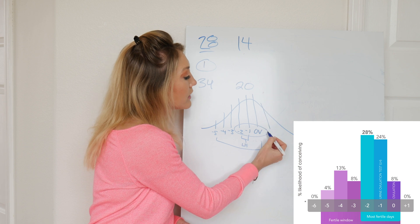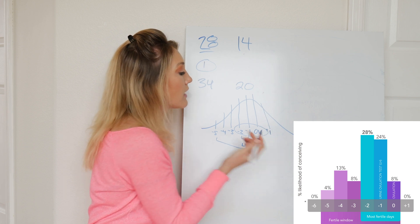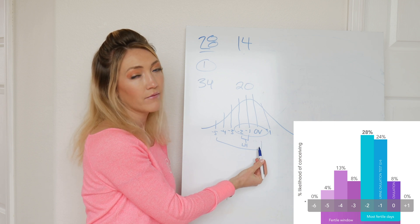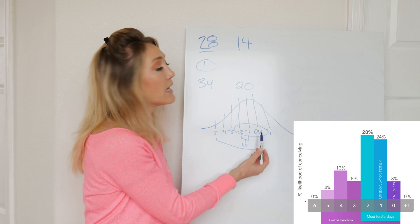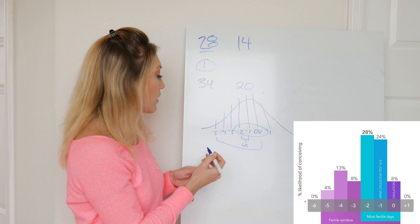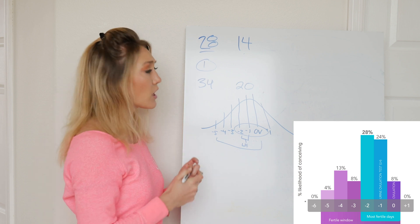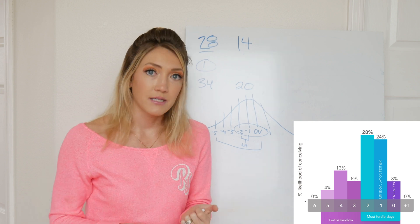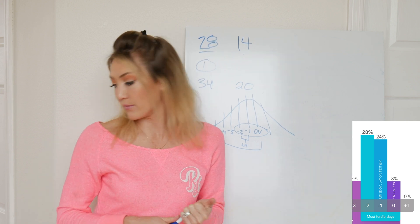There's a really small chance that you could get pregnant on plus one the day after ovulation, but with the egg only being viable for up to 24 hours, it's a really low chance.